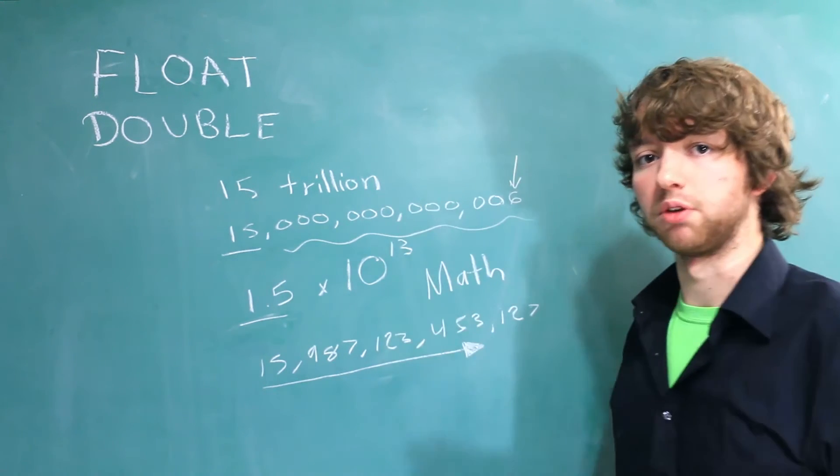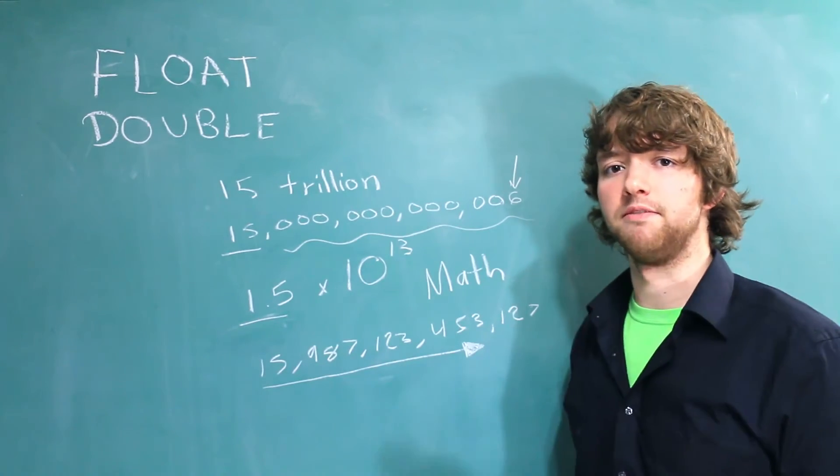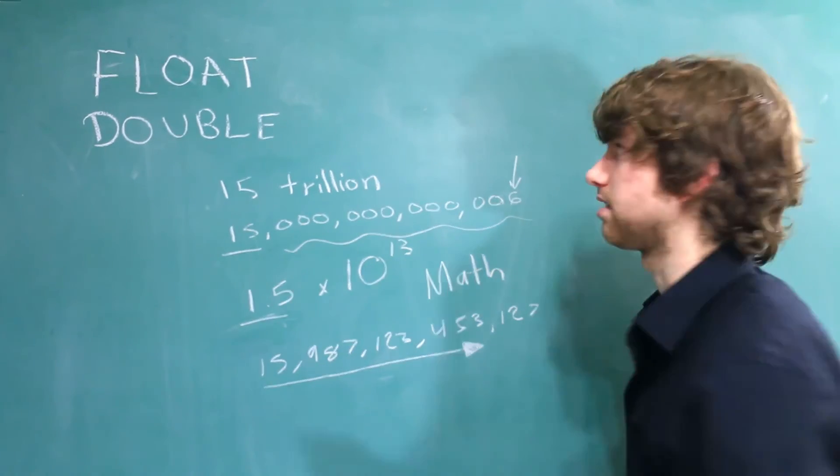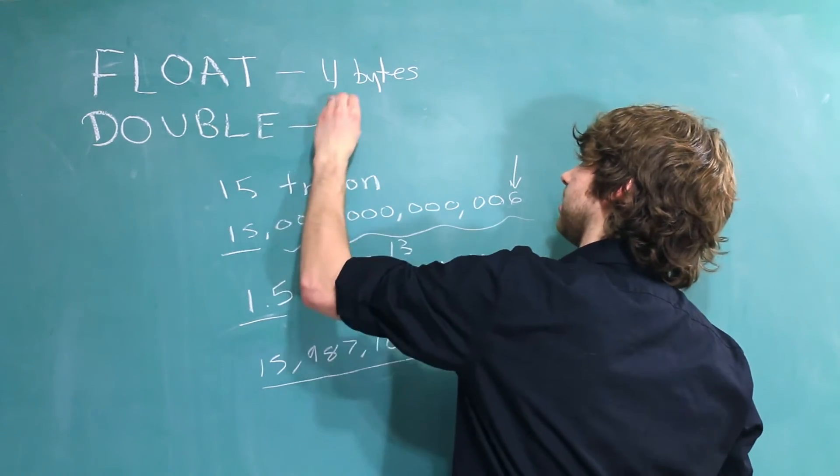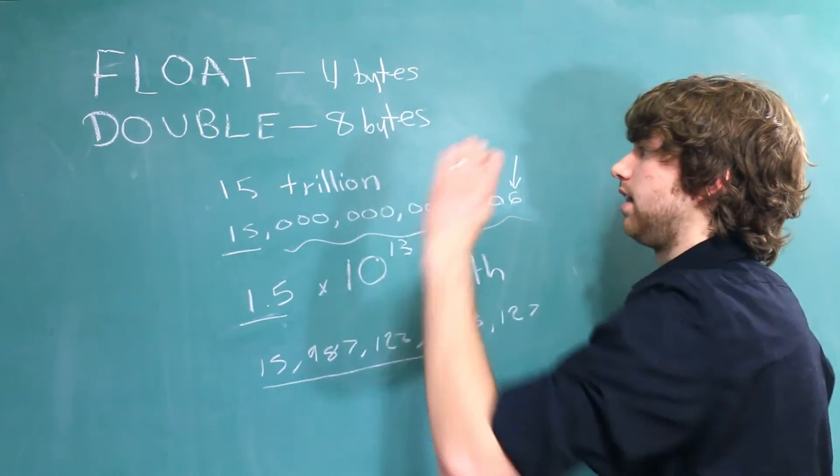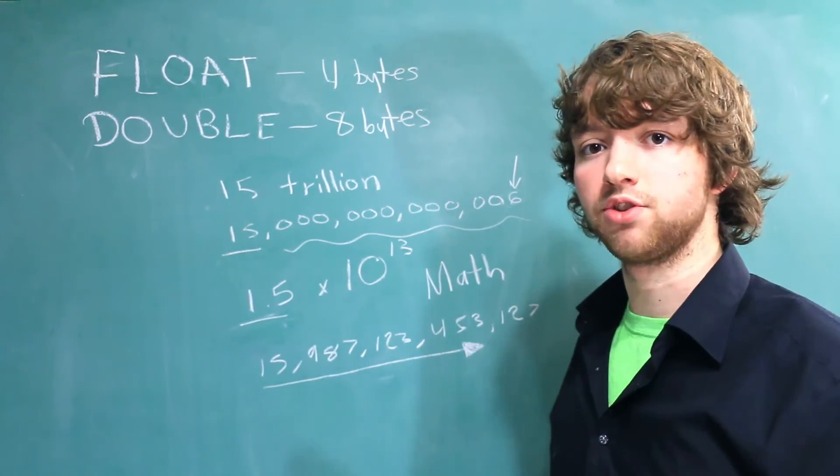Now, I said both of these are floating point numbers, so what exactly is the difference? Well, it just has to do with the size. Float is 4 bytes, as I said earlier, and double is 8 bytes. And because the double has more bytes, it can maintain a higher level of precision.